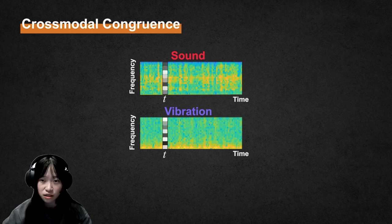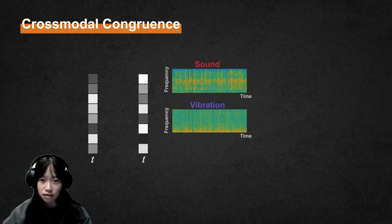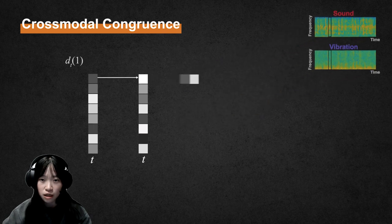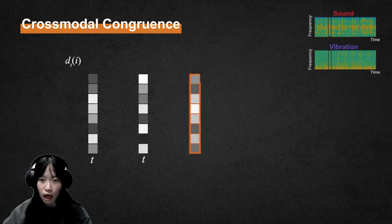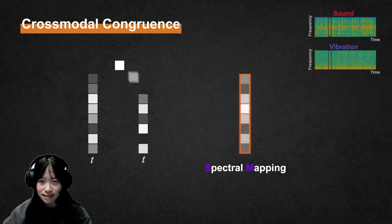Based on that, we track the frequency components from the two modalities at the current time step and compare them in the same band using gradient distance, resulting in 1D mapping. However, the information covered by this 1D spectrum mapping is still limited.